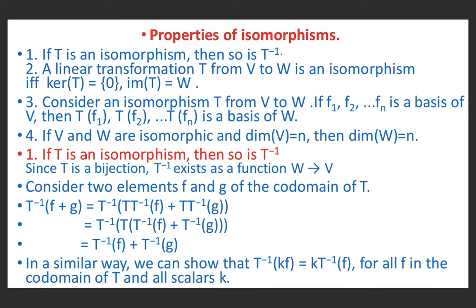First, we prove: if T is an isomorphism then T⁻¹ is also an isomorphism. Because T is an isomorphism, it is a bijection — one-one and onto. Therefore T⁻¹ exists and it is a function from W to V. Now we will show that T⁻¹ is an isomorphism. T is already given to be an isomorphism, so T is linear.